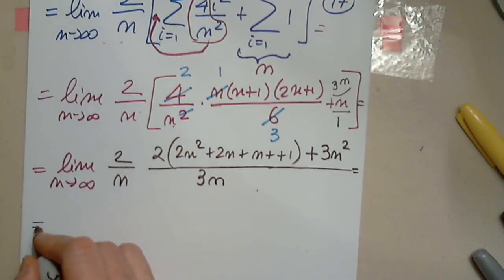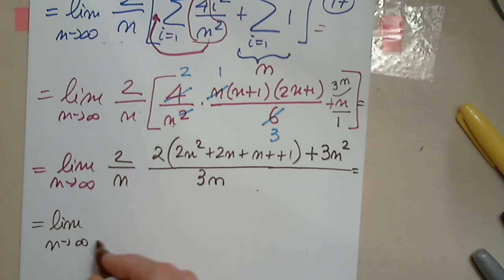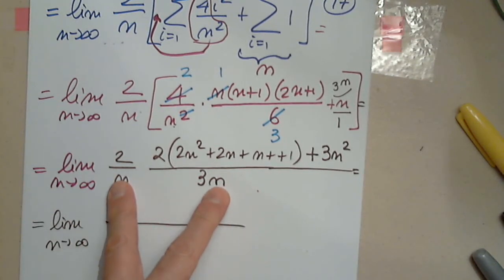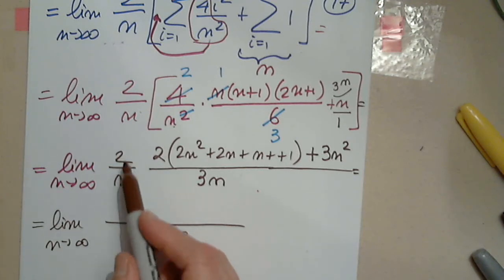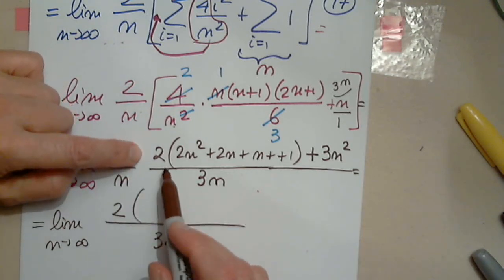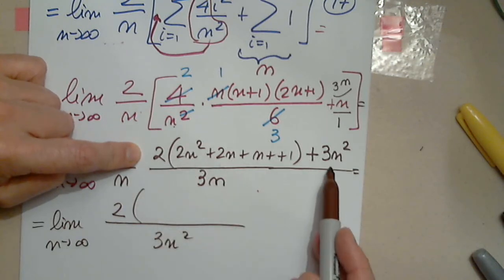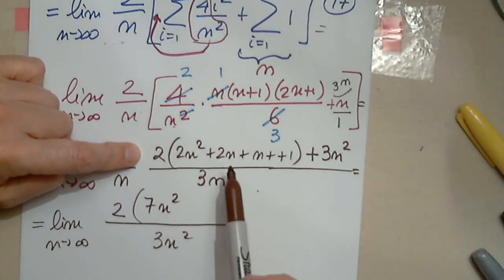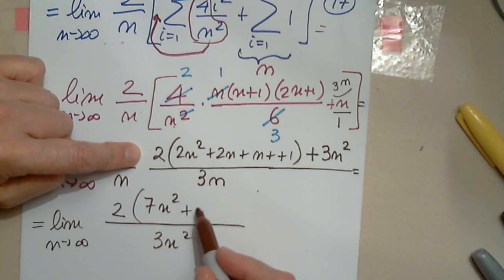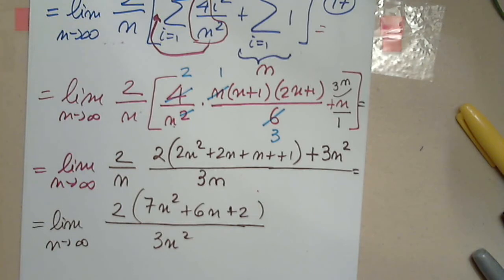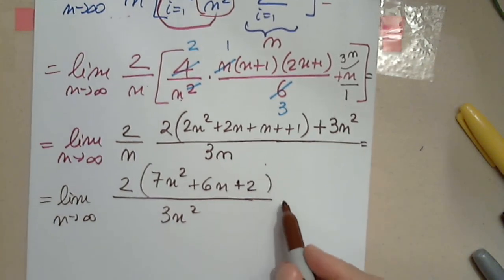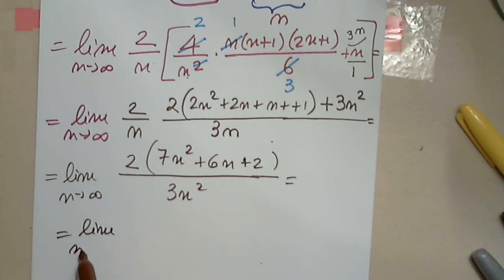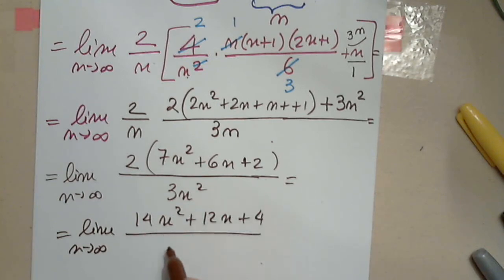Getting very close. Limit as n approaches infinity. The denominator is 3n squared. The numerator is 2. Let's see what I can do here to simplify: 2 times 2 is 4n squared plus 3, 7n squared. 2n plus n is 3n times 2 plus 6n, and 2 times 1 is plus 2. I will distribute the 2: 14n squared plus 12n plus 4 divided by 3n squared.